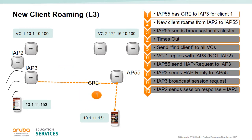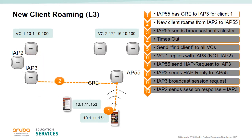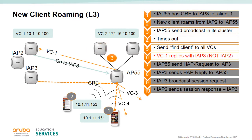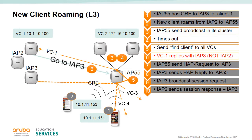We will now review an example of a new client roaming - a 10-step process. Client 1 has already roamed to the second cluster and has already established a GRE tunnel between home AP3 and foreign AP55. A new client, client 2, roams to foreign AP55. AP55 sends out a broadcast in its own cluster, but since there is no reference to client 2 in cluster 2, the session request times out. Foreign AP55 then sends a message to all VCs in other clusters to find the client information. Cluster 1 VC1 replies with a known client message and directs foreign AP55 to AP3.